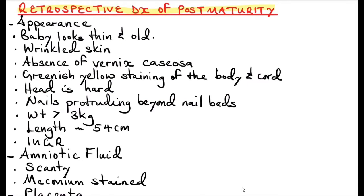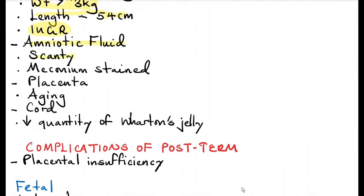Retrospective diagnosis of post-maturity is when the baby is already born. On appearance, the baby looks thin and old, the skin is wrinkled, and there's absence of vernix caseosa — the white film that usually covers the baby. There's greenish-yellow staining of the body and cord because of meconium. The head is hard with no evidence of molding, and nails protrude beyond the nail beds. Weight is usually more than 3 kg and length approximately 54 centimeters or more, though there could also be evidence of intrauterine growth retardation. The amniotic fluid may be scanty or meconium-stained. The placenta shows aging with infarcts or calcifications, and the cord has reduced quantity of Wharton's jelly.